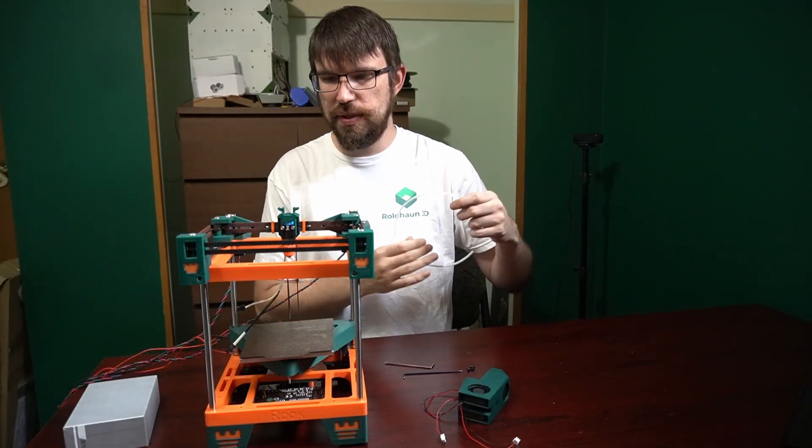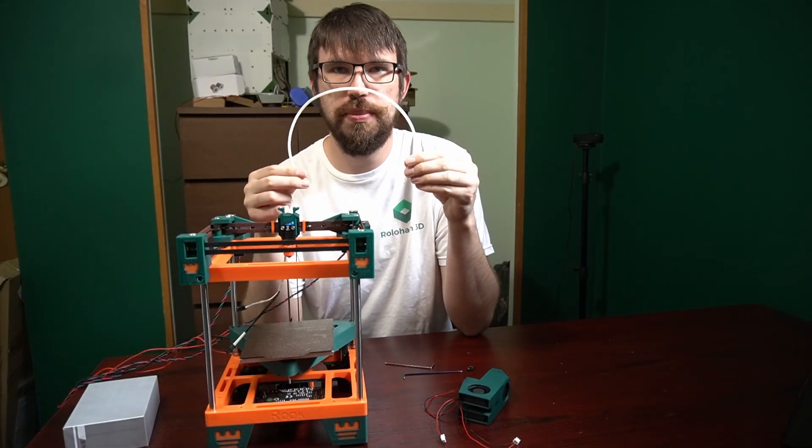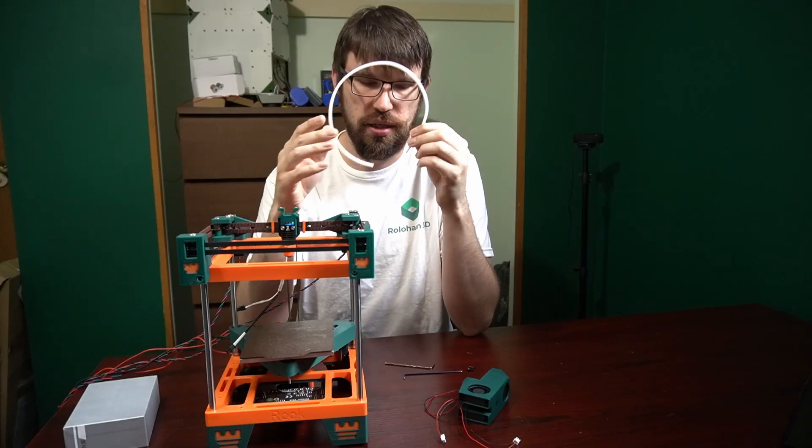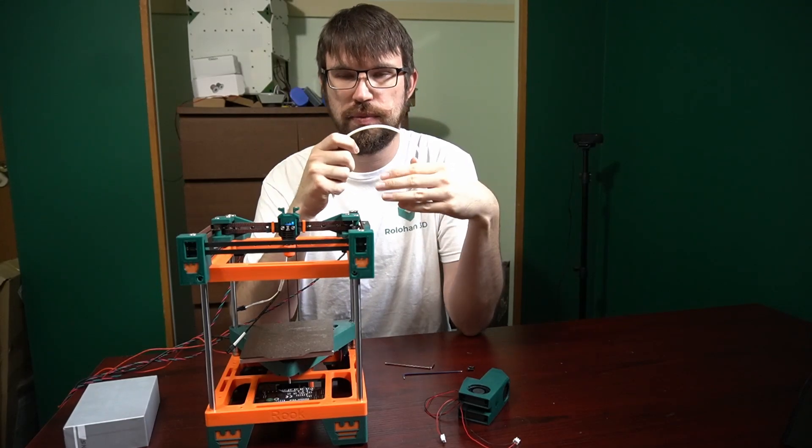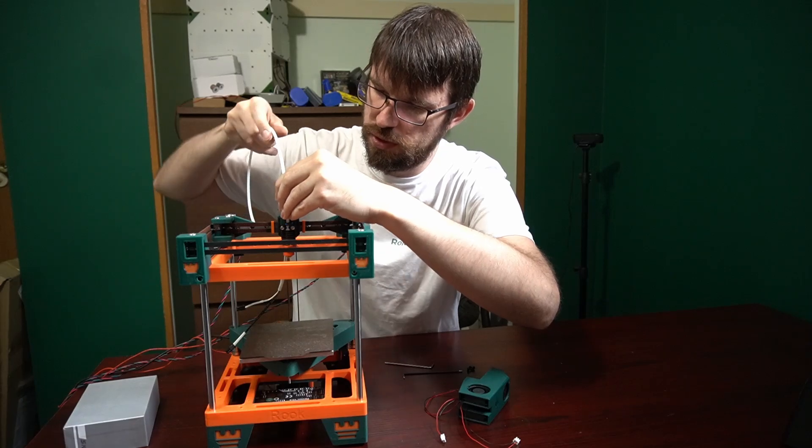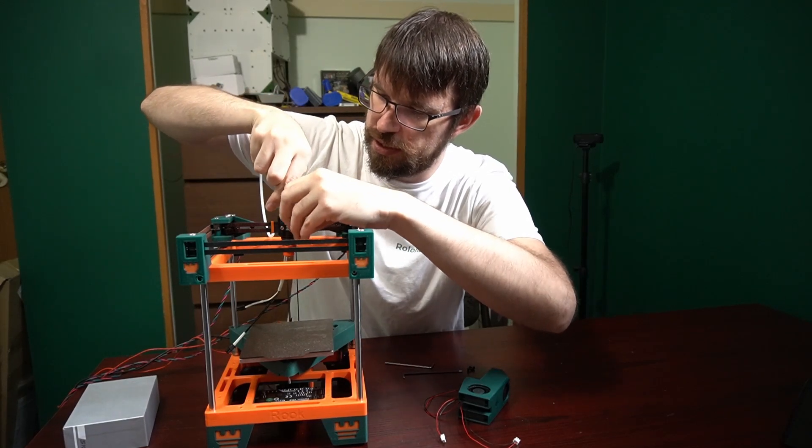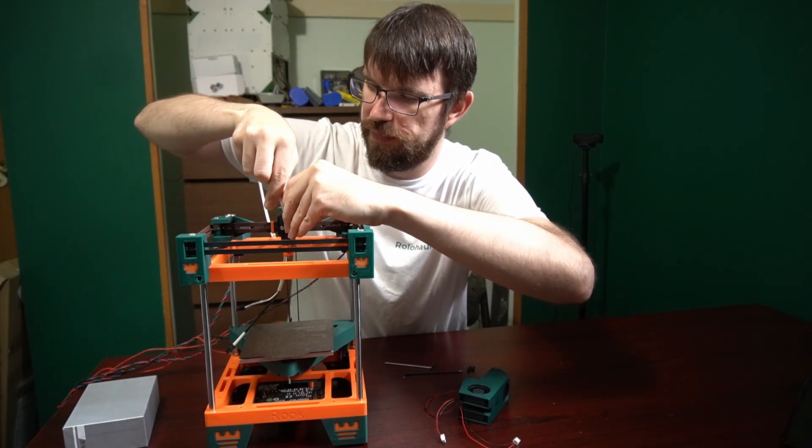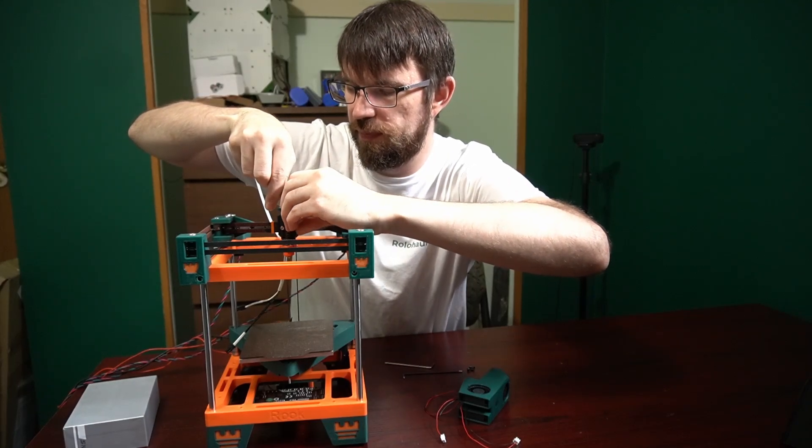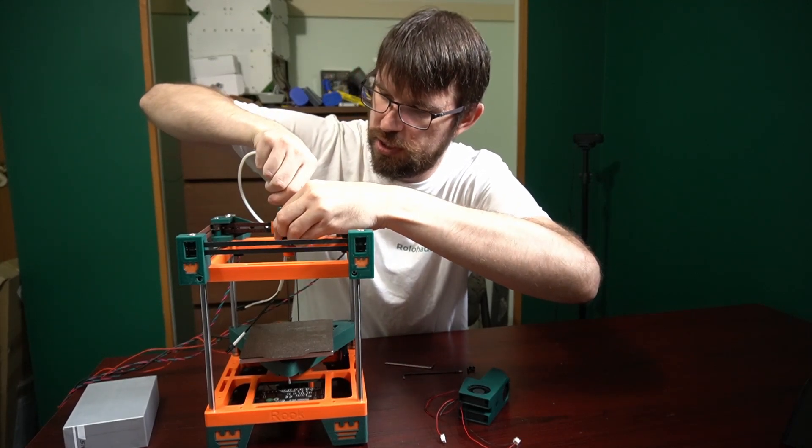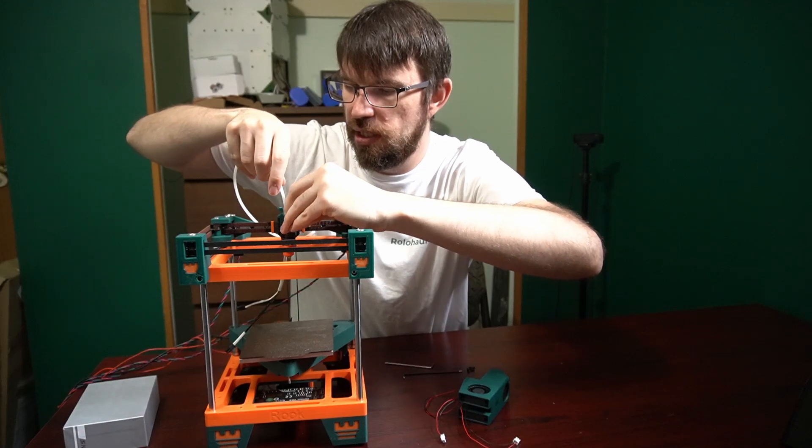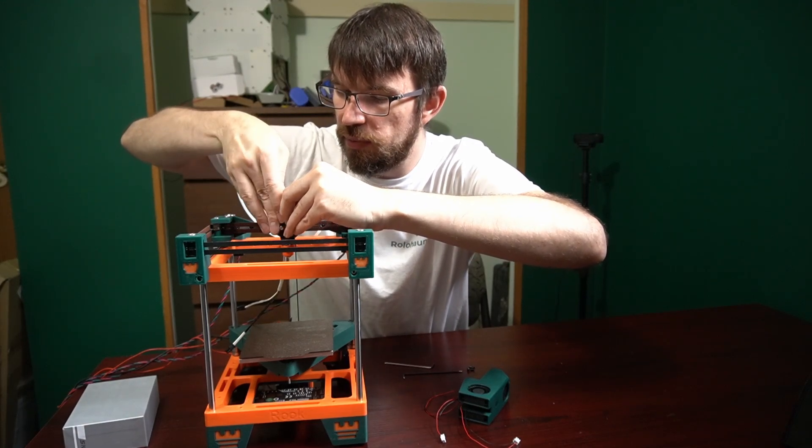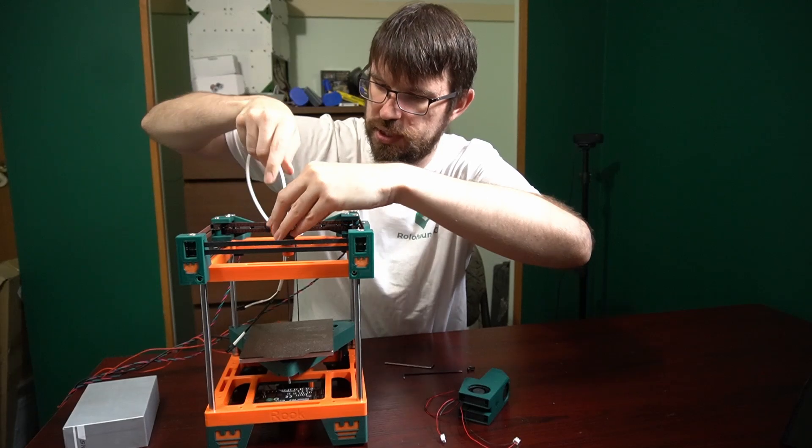What we want to do next is we want to attach the Bowden tube to the hot end. It's just easier to get access with the Rookery off. So we'll insert our Bowden tube here, we'll cut it to length if necessary, make sure it's inserted nice and all the way. We'll put our retaining clip in there so it's nice and secure.